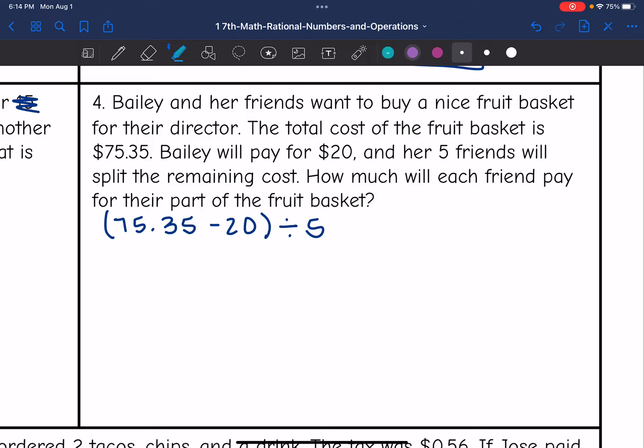Let's start by determining what 75.35 minus 20 is. So 5 minus 0 is 5, 3 minus 0 is 3, bring down the decimal, 5 minus 0 is 5, and 7 minus 2 is 5. So after Bailey pays for her part, there will be $55.35 left to pay.